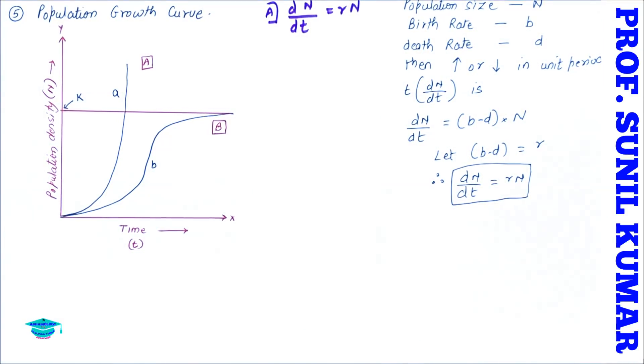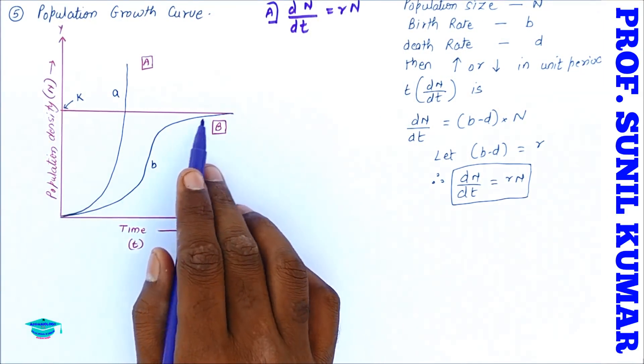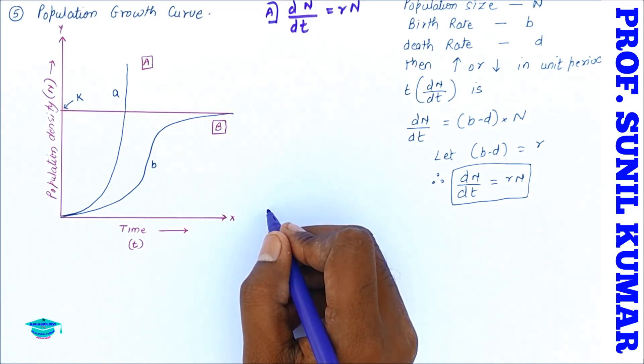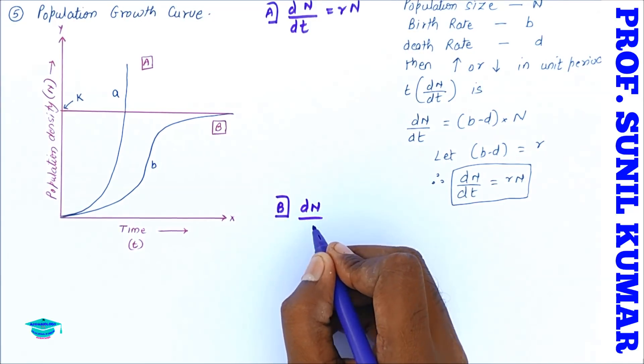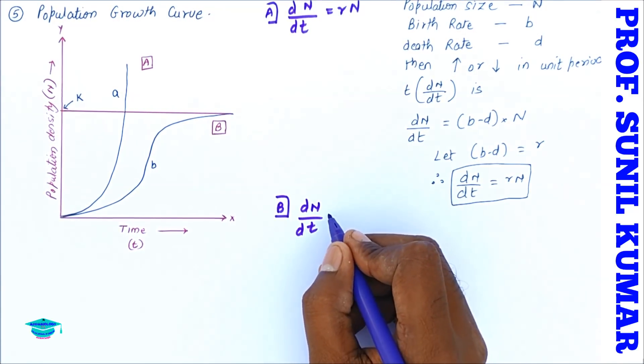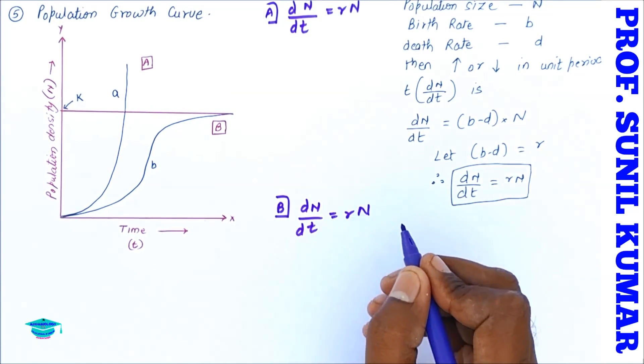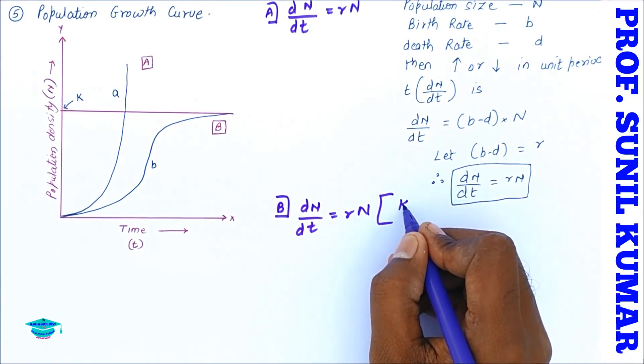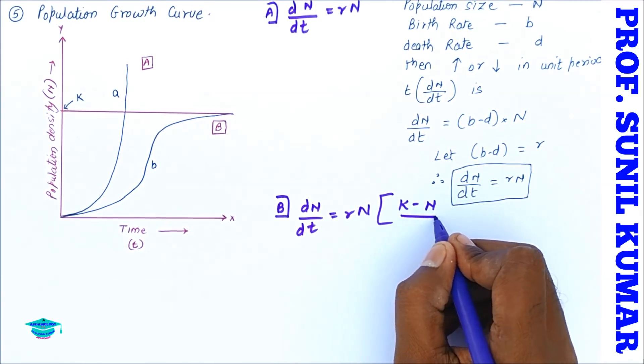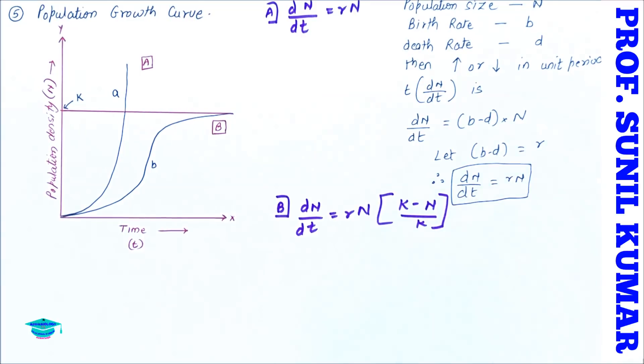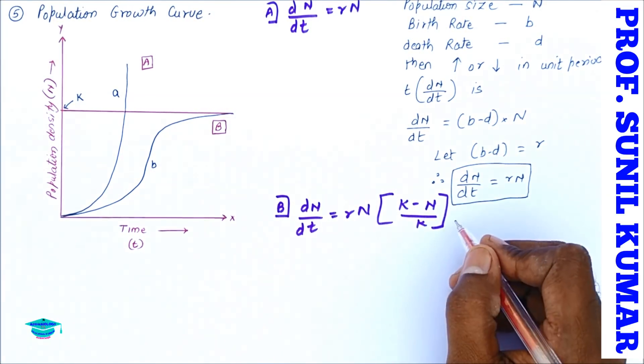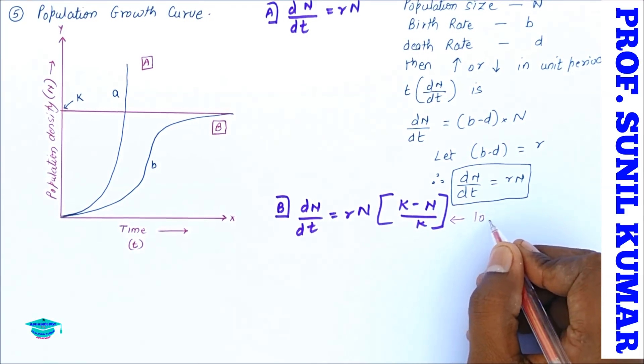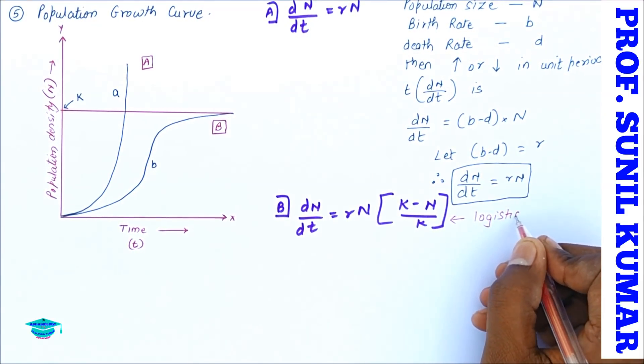Therefore, dN/dt is equal to rN. This is how we calculate the formula for the first alphabet A. Now the second one B. When we look at the B curve, we need to understand it is not crossing the carrying capacity. It is somewhere touching the carrying capacity but not crossing it. It is representing an S-shaped curve or a sigmoid curve.